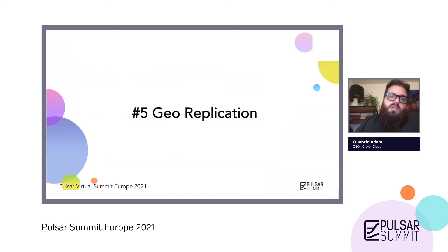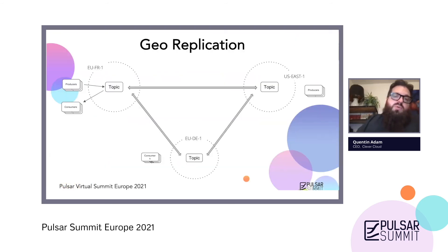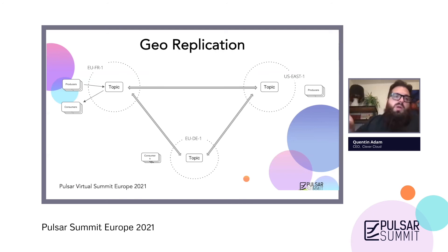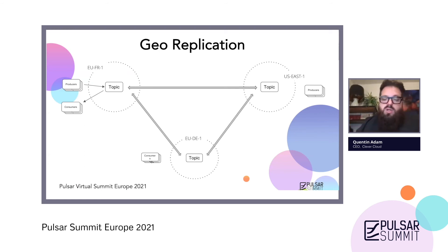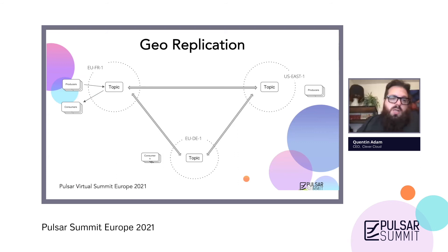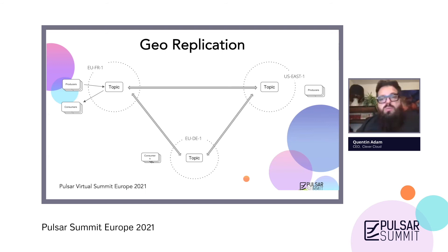Last but not least is geo-replication in Pulsar, which is at the heart of what we need to do at CleverCloud because people just want to deploy and forget about everything. Geo-replication is something we're working on actively and it will be something we use for more and more consumers around the world.